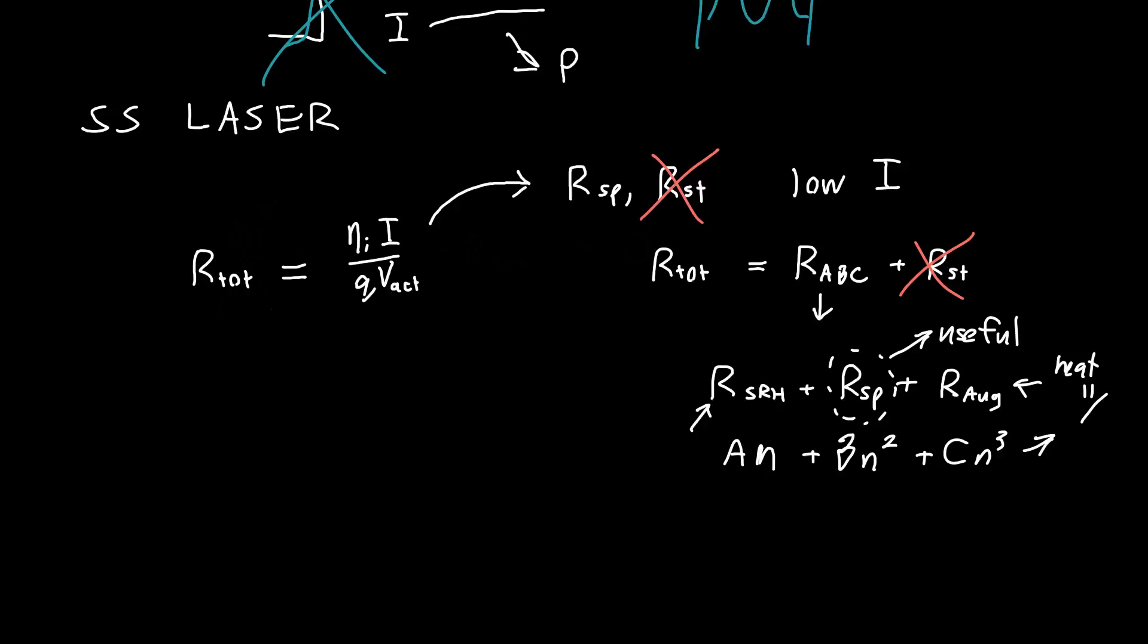And so we're just going to play a little trick to make this equation as simple as possible. We're going to multiply everything by the spontaneous recombination rate and divide everything by the total recombination rate. And then we've got something that looks like this. So now we've got eta i, i over q times the active region volume. And I'm just going to call this eta spontaneous. So this is our, also known as our spontaneous recombination efficiency.